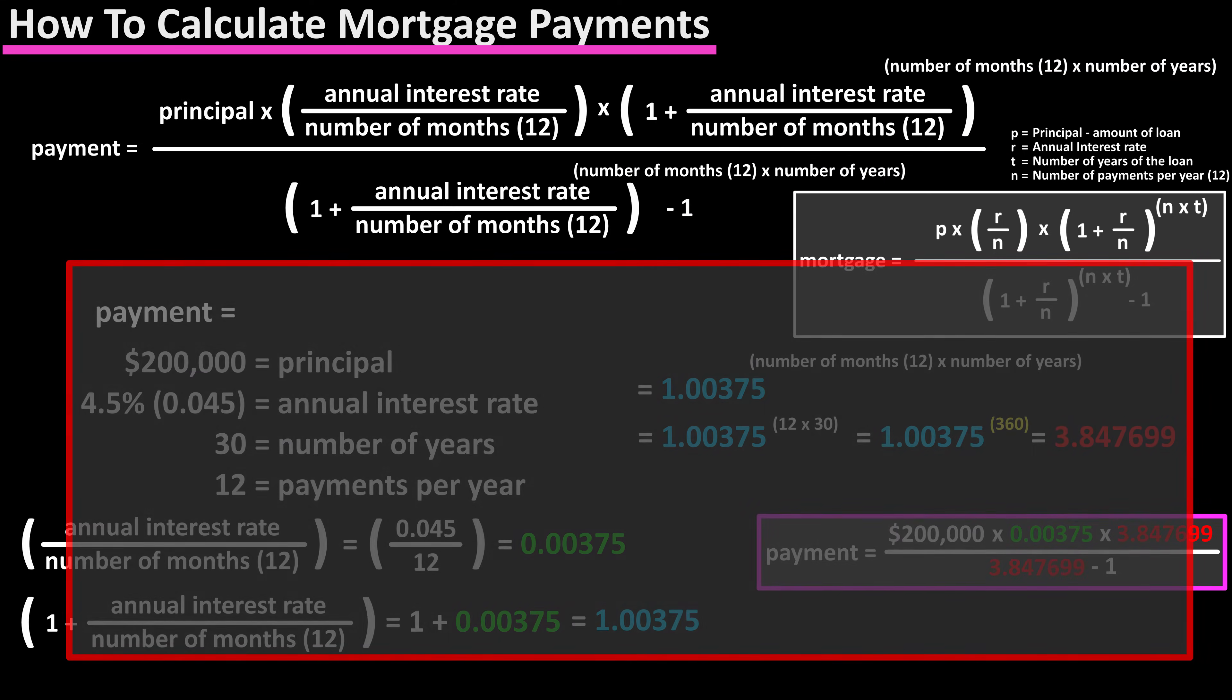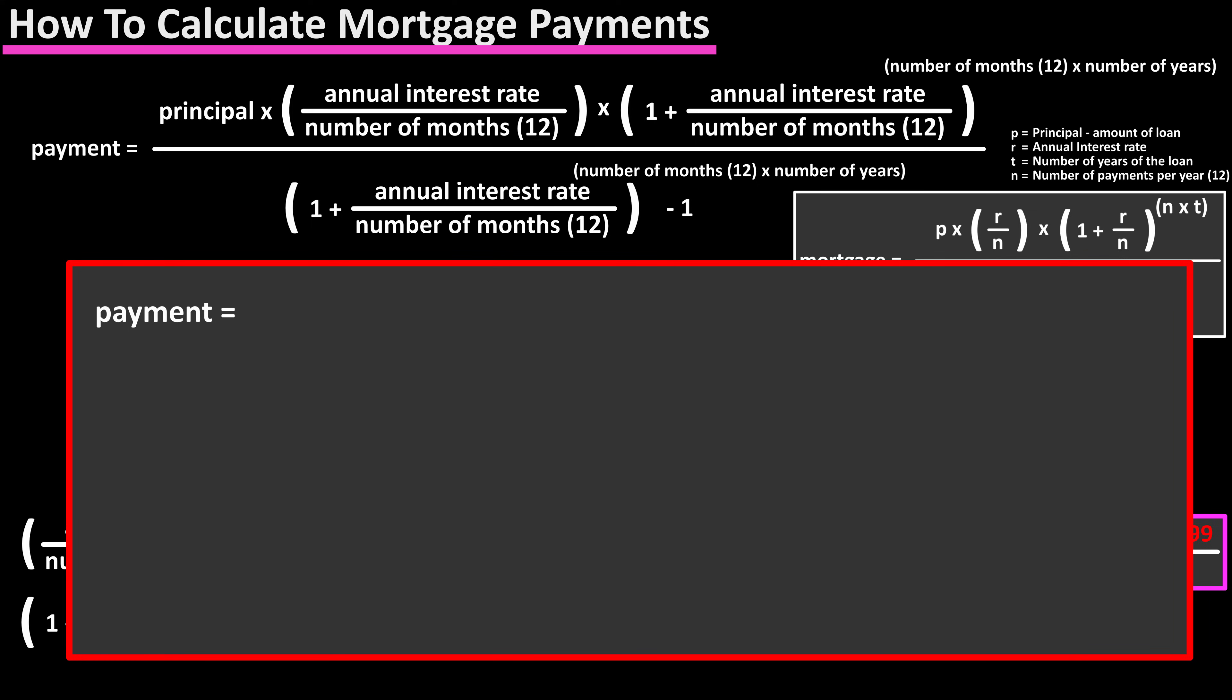Now we have everything in basic terms to plug and calculate into our formula, so $200,000 times 0.00375 times 3.847699 divided by 3.847699 minus 1, and this calculates out to $1,013.37 rounding off, and that would be the monthly mortgage payment.